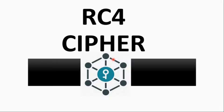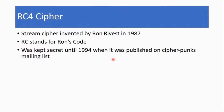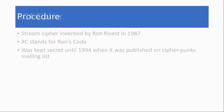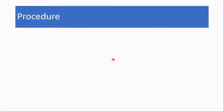Hello everyone and welcome to Cryptography Home. In this video we'll be discussing the RC4 cipher. We'll look at how it works and also look at a simplified example of how it is implemented. It is a stream cipher invented by Ron Rivest in 1987. So let's go straight to look at how it works.